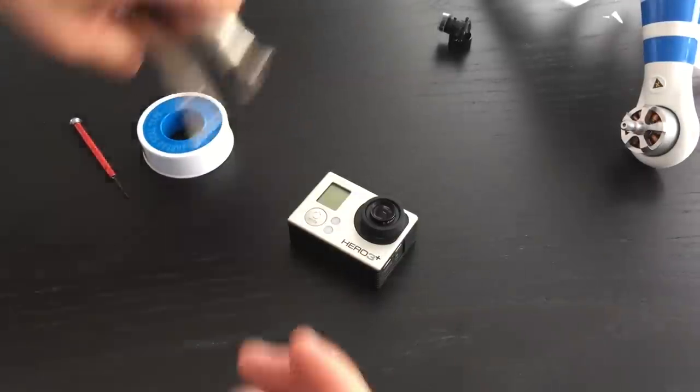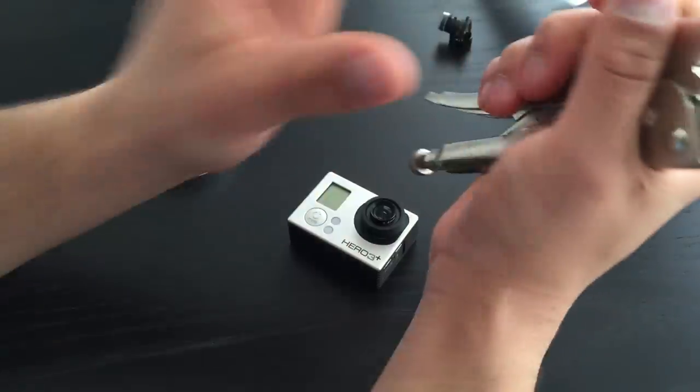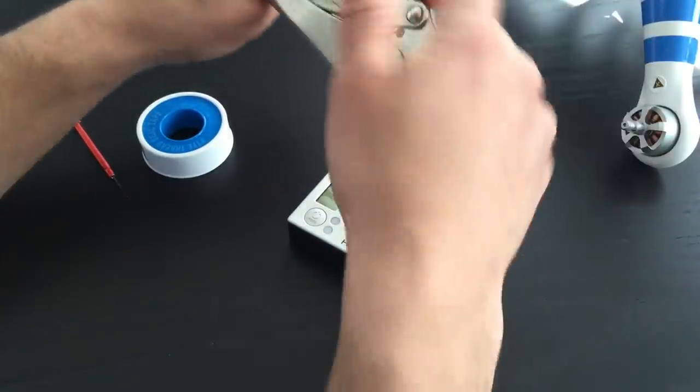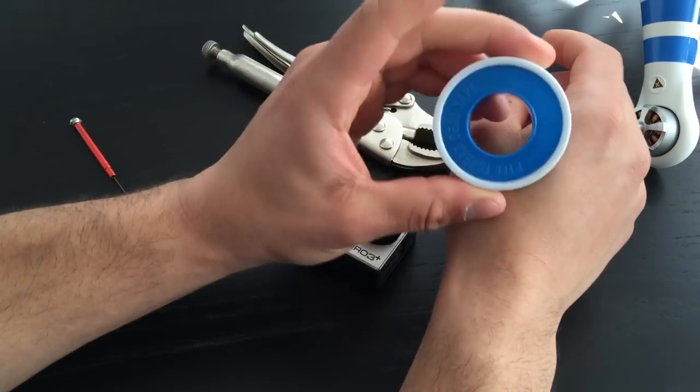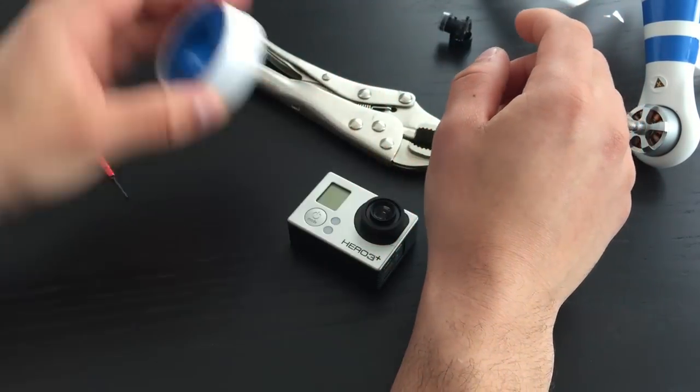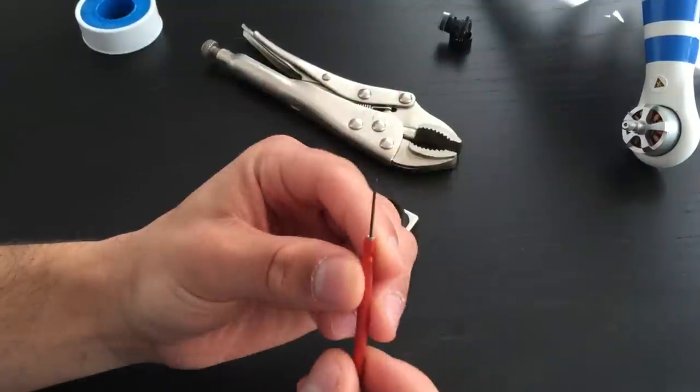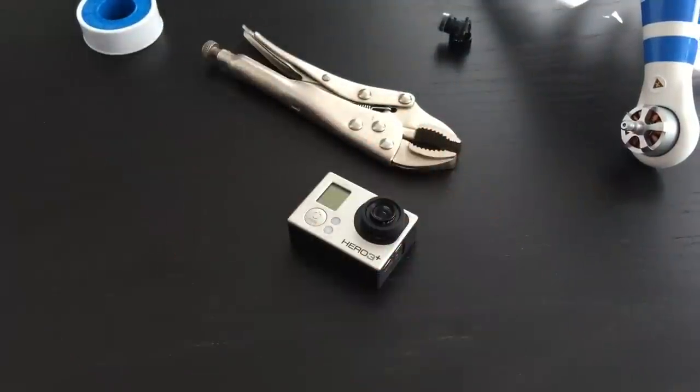These are the tools you'll need. Some type of pliers. Some people use rubber plumbers pliers. It's not necessary really. I have some tape here. Some thread seal tape and I'll explain why I use that in a bit. And then just a very small screwdriver. Just something you can use as a pick to remove the lens.